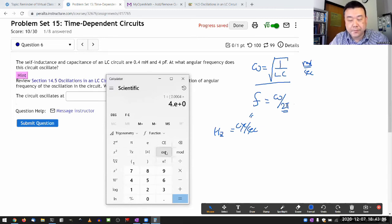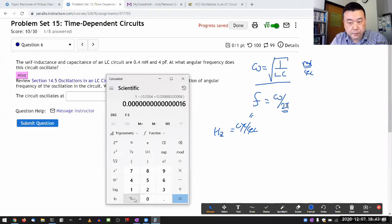I happen to have memorized that pico means 10 to the minus 12. That comes after nano. So that's 1 over LC, and I need to take the square root of it.